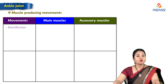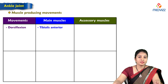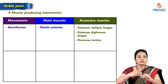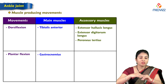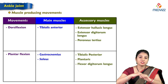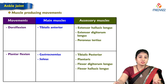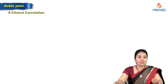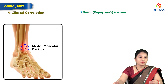Dorsiflexion is produced mainly by tibialis anterior, with accessory muscles including extensor hallucis longus, extensor digitorum longus, and peroneus tertius. Plantar flexion is produced mainly by gastrocnemius and soleus, with contributions from tibialis posterior, plantaris, flexor digitorum longus, and flexor hallucis longus.